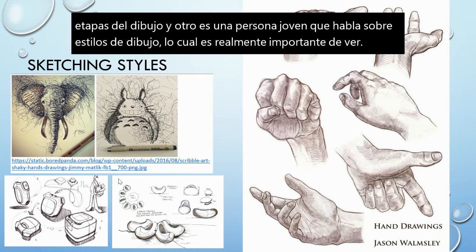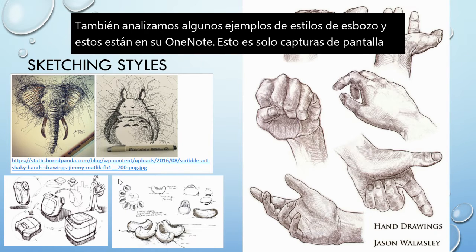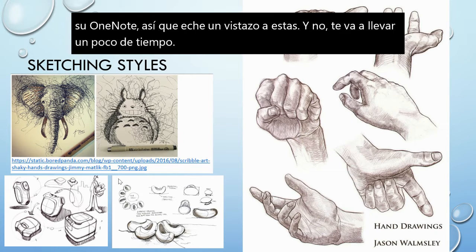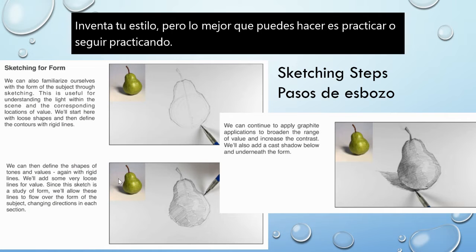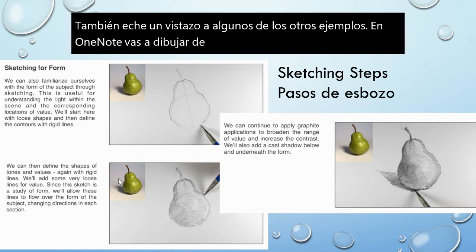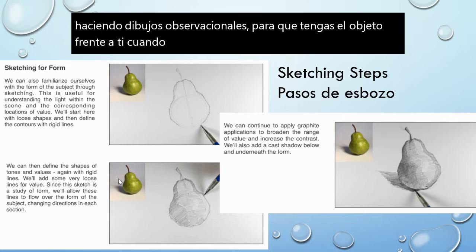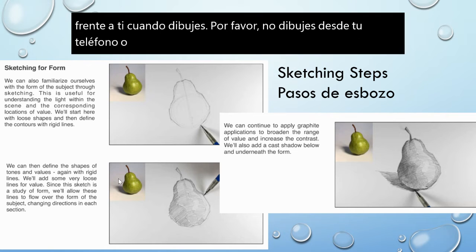We also looked at some sketching style examples, and these are in your OneNote. Please take a look at these and know it's going to take you a little bit of time to come up with your style, but the best thing for you to do is to practice. Also take a look at some of the other examples in OneNote. You're going to be drawing from life, so please don't draw from your phone or pictures — you want to draw from the object.